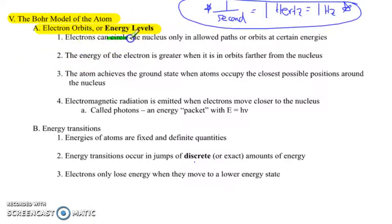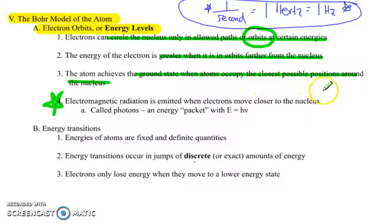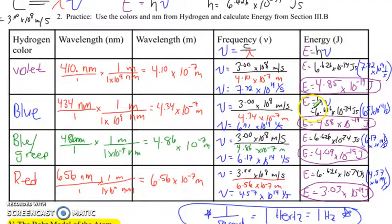Bohr discovered that electrons can circle the nucleus only in allowed paths or orbits at certain energies. It's really important that we look at that word orbits. The energy of the electron is greater when it is in orbits farther away from the nucleus. The atom achieves the ground state when atoms occupy the closest possible positions around the nucleus. Electromagnetic radiation is emitted when electrons move closer to the nucleus, called photons, an energy packet with the equation E equals h nu.